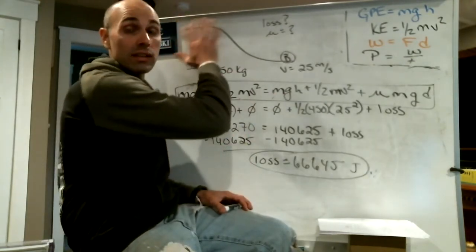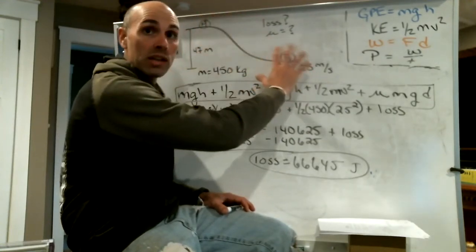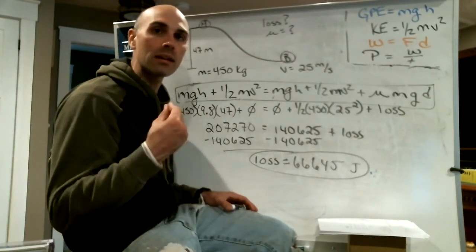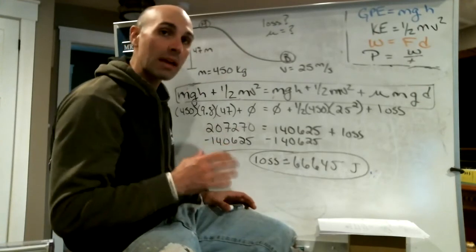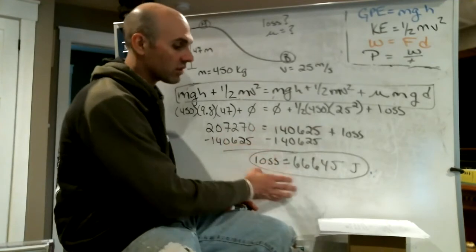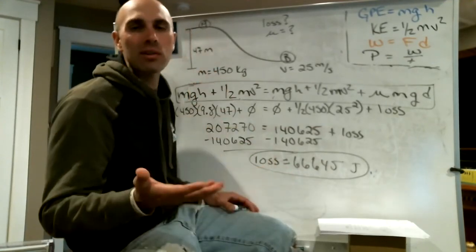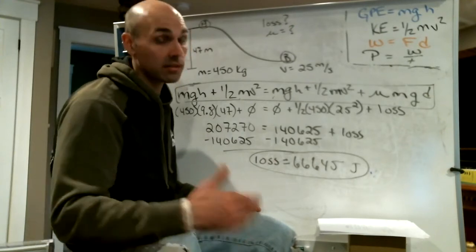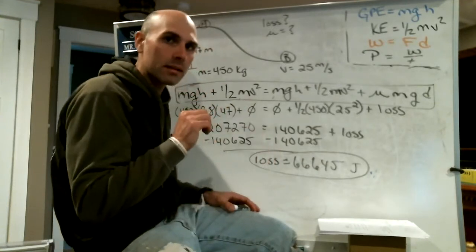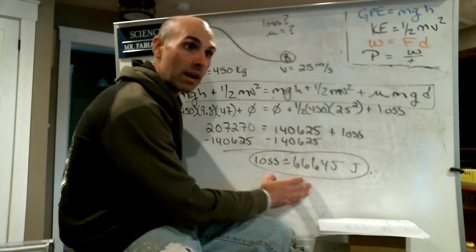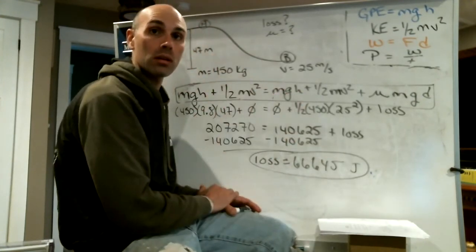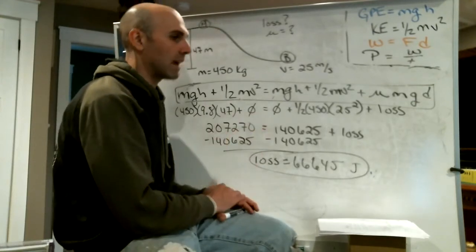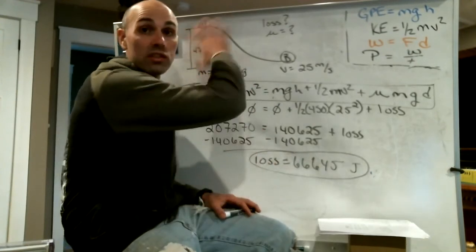In a perfect world, all the energy at the top transfers to all the energy at the bottom, but it doesn't. We have friction, sound, heat — the rubbing between the wheels and the track — so some energy is dissipated to other areas. Conservation of energy says energy is neither created nor destroyed, only transferred or transformed. For our purposes, this energy went into friction, slowing the cart down.